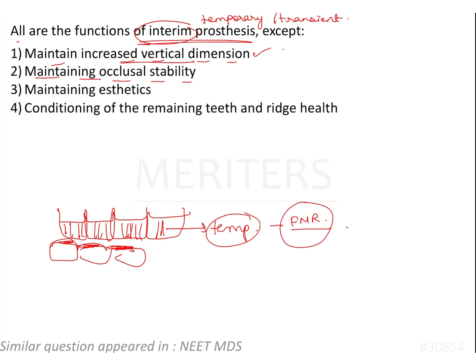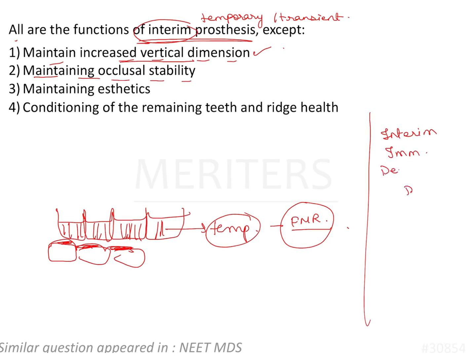That is for FMR cases. For a conventional immediate denture case, for example if you are talking about an interim denture — here, supposing maxillary teeth are extracted and mandibular teeth are intact — you ensure harmony between the occlusion of both arches, and the interim denture supports that. The patient is going to bite better with it and patient comfort is going to be better. So it maintains occlusal stability in both FMR and complete denture cases.